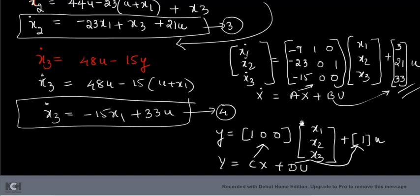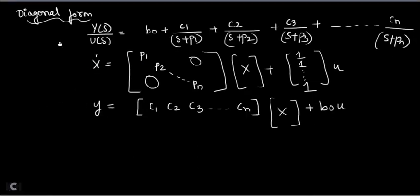For the diagonal canonical form (DCF), first convert the transfer function into partial fraction form: Y/U = B0 + C1/(s+P1) + C2/(s+P2) + C3/(s+P3), where P1, P2, P3 are the poles (denominator roots) and C1, C2, C3 are partial fraction constants. B0 is a constant term that may or may not be present. Once in this form, the problem is 90% over.